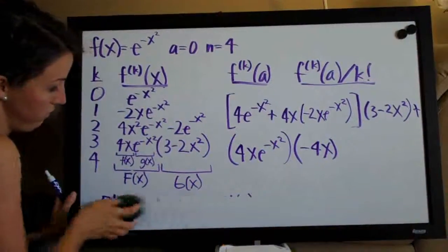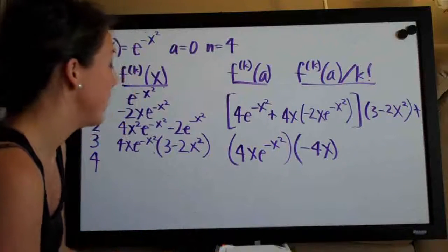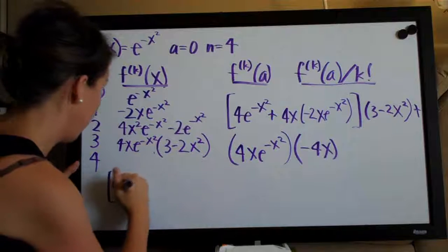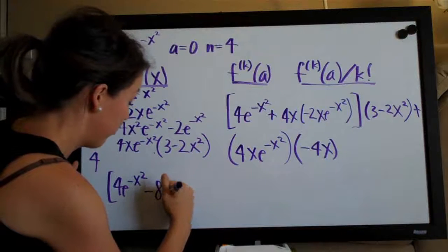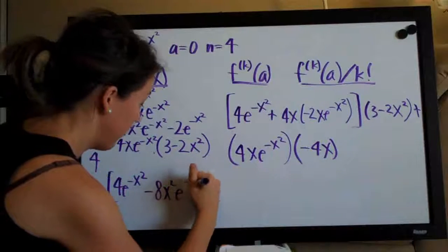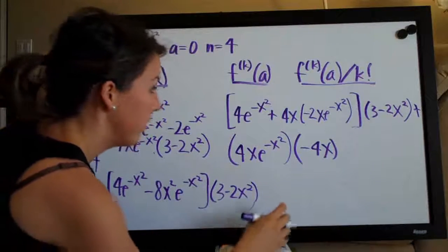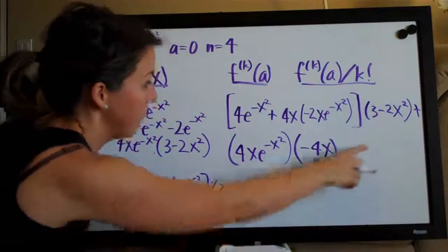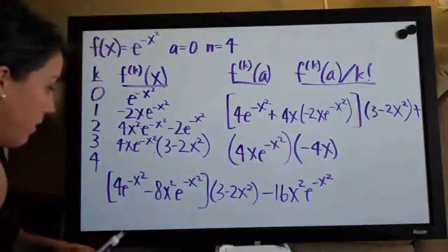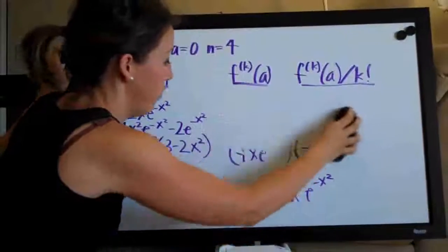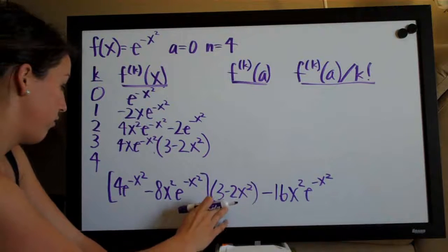Okay, well that was a hefty derivative. Now we just need to simplify, which won't be an easy task either. So we have 4·e^(-x²) and then since we have positive 4 and negative 2, we're looking at negative 8x²·e^(-x²). That whole thing times (3 minus 2x²), and then this will be minus — since we have a plus and then a negative — minus 16x²·e^(-x²). So that was simplification step number 1.